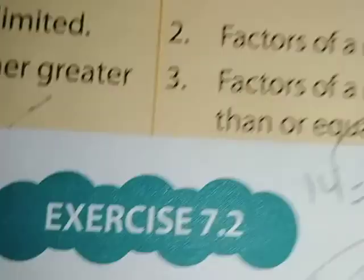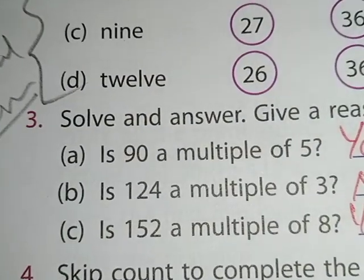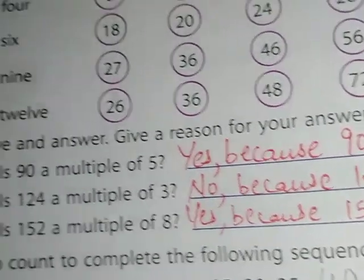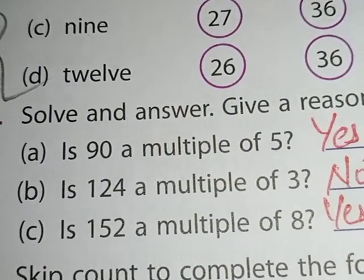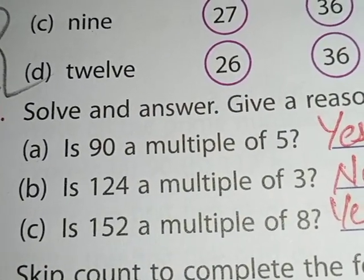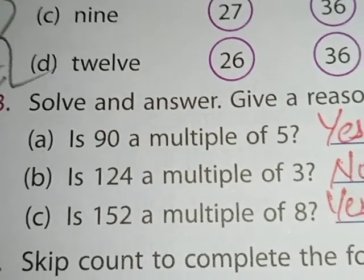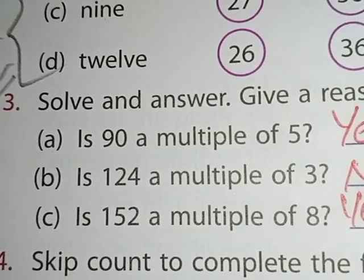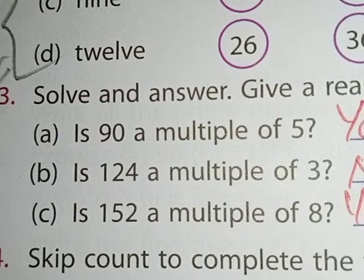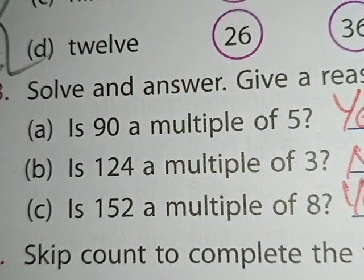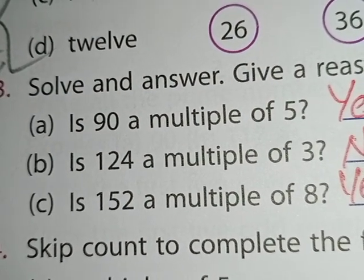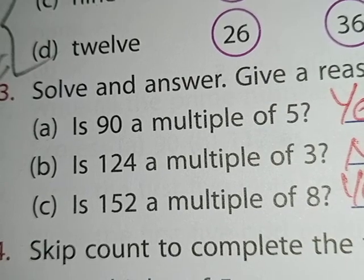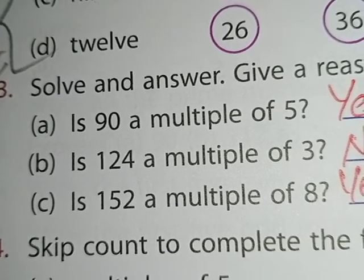Exercise 7.2, question number 3: Solve and answer, give a reason for your answer. The question is, is 90 a multiple of 5? It is asking, can 90 be divided by 5, or does 90 come in the table of 5? Then only it will be the multiple. Whenever we get a question like, is this number a multiple of this number, something like that...